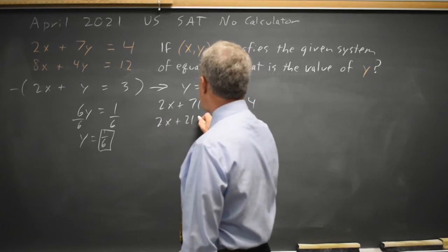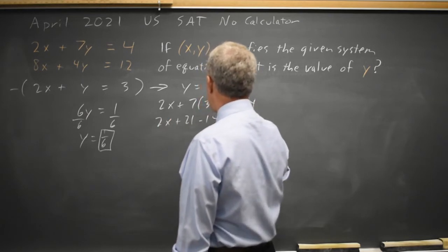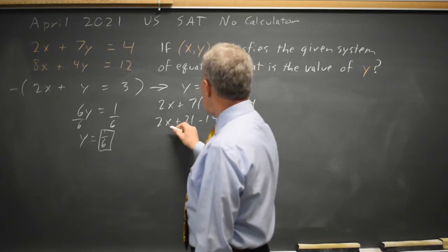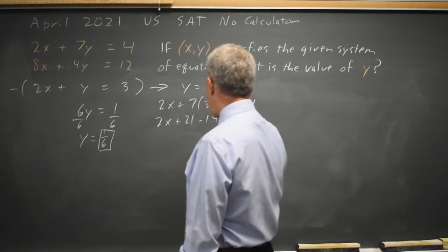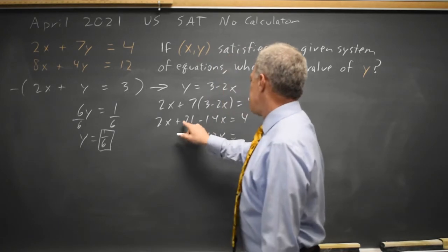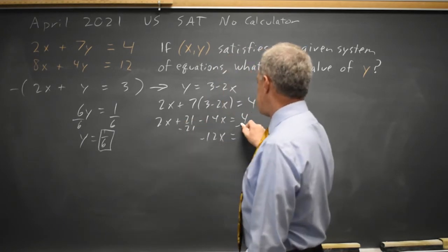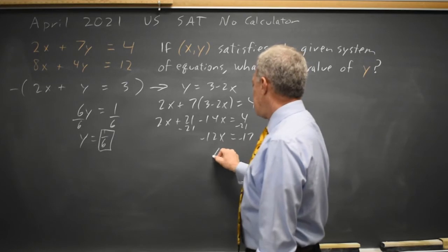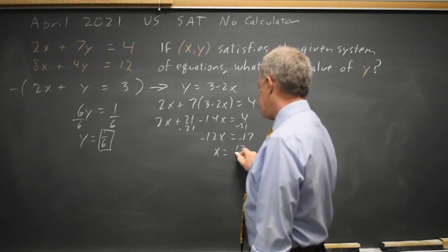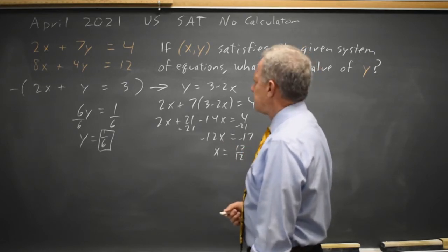2x plus 21 minus 14x equals 4. 2x minus 14x is negative 12x. If I subtract 21 from both sides, 4 minus 21 is negative 17, so negative 12x equals negative 17 and x equals 17/12.